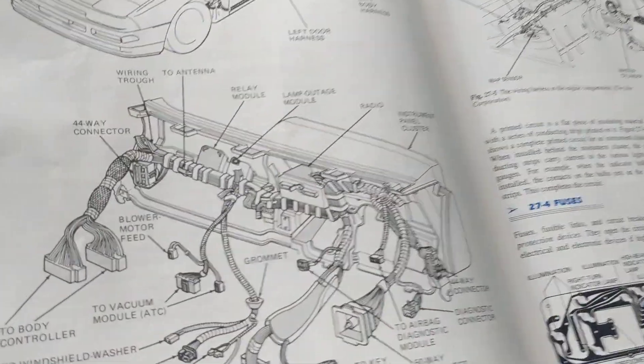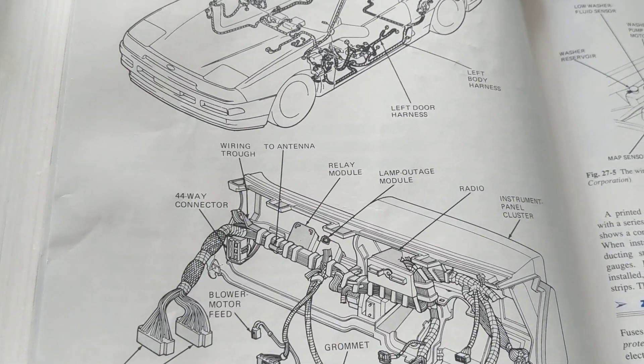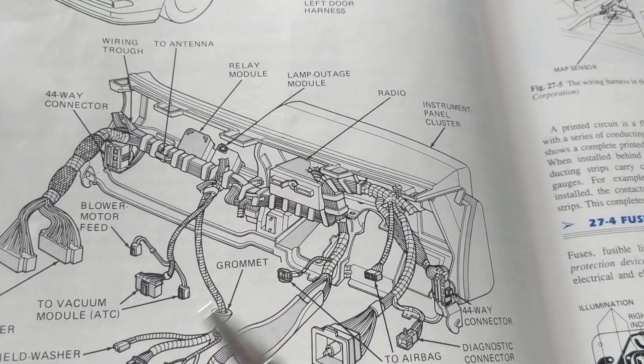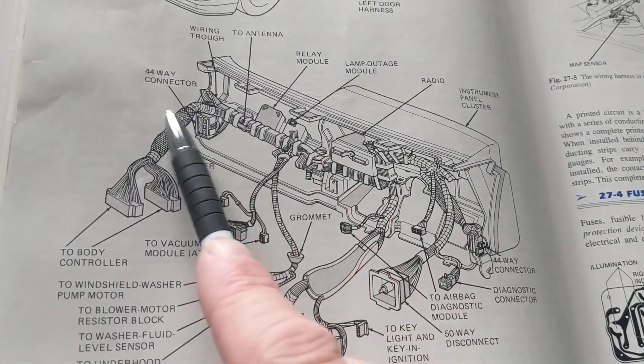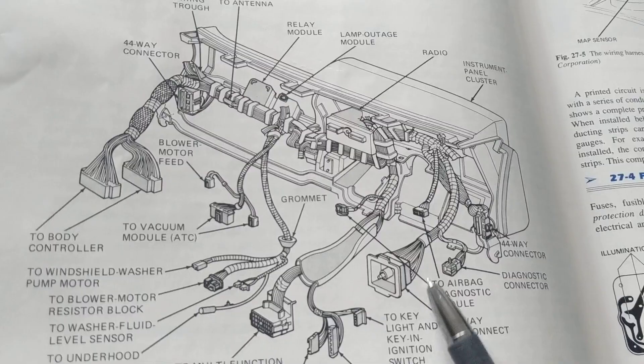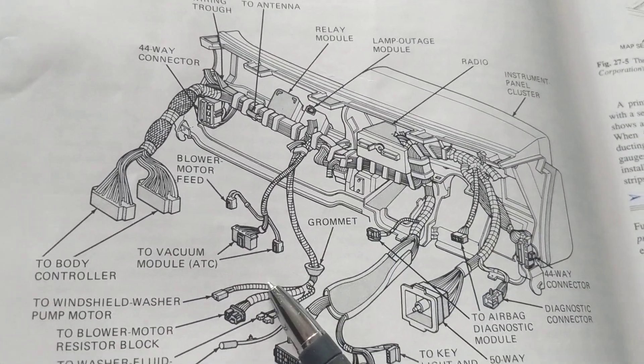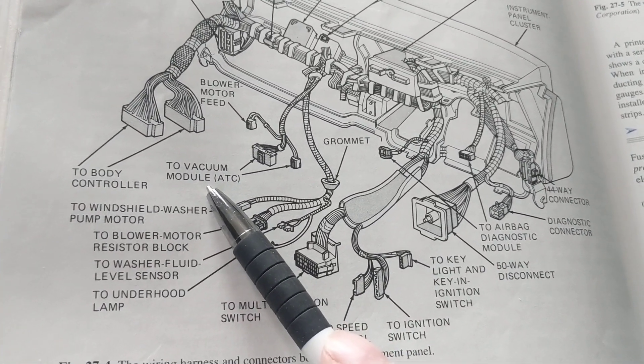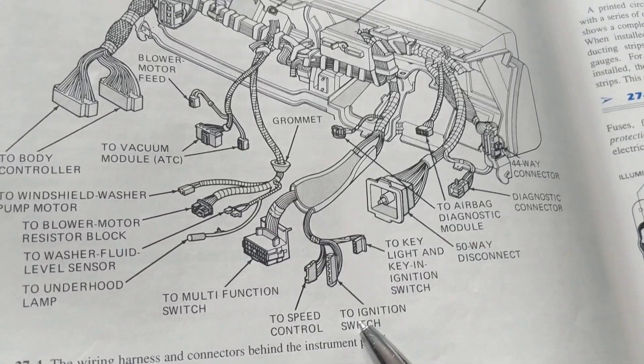Okay, speaking about modules and relays and all kinds of PCMs and body control modules, if you look at this, the instrument panel cluster over here, the radio, you see all these connectors. Obviously, all these connectors go to modules and fans, and as you can see, a vacuum module, a module, as you can see over here, a switch, speed control, ignition switch.